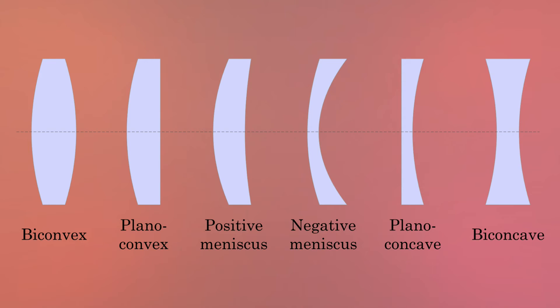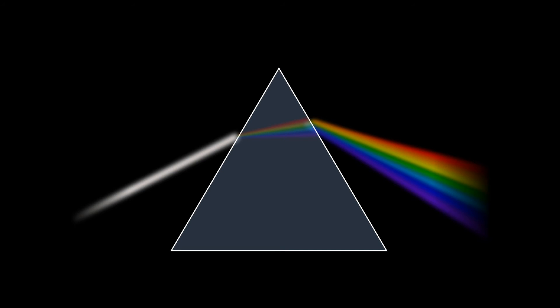Now all this math about refraction is useful in helping us make lenses and explaining why cameras have color fringe in their images, but do the color-splitting properties of prisms see any real use? The short answer is yes.